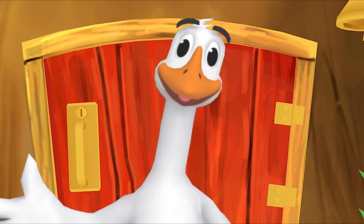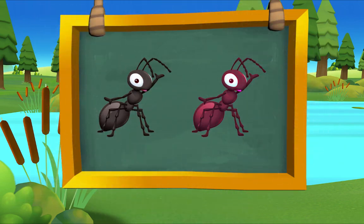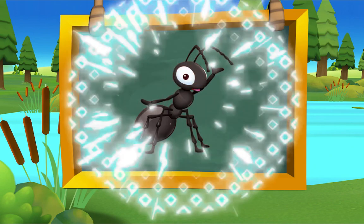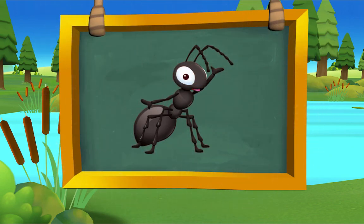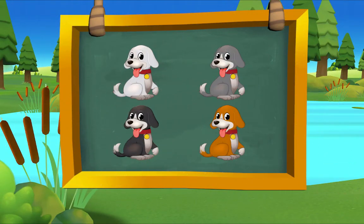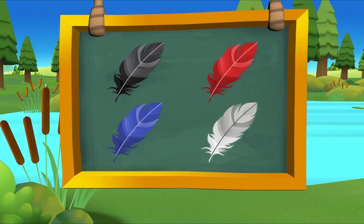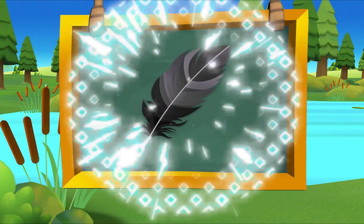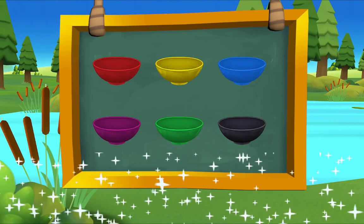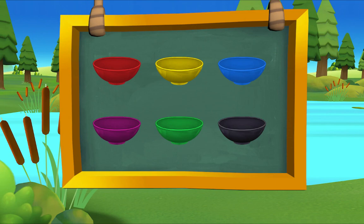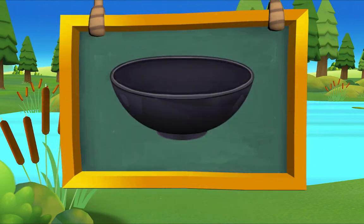Here's something we already did — let's do it again. Which ant is black? There it is — black ant. Which dog is black? There it is — black dog. Which feather is black? There it is — black feather. Which bowl is black? There it is — black bowl. Very good!